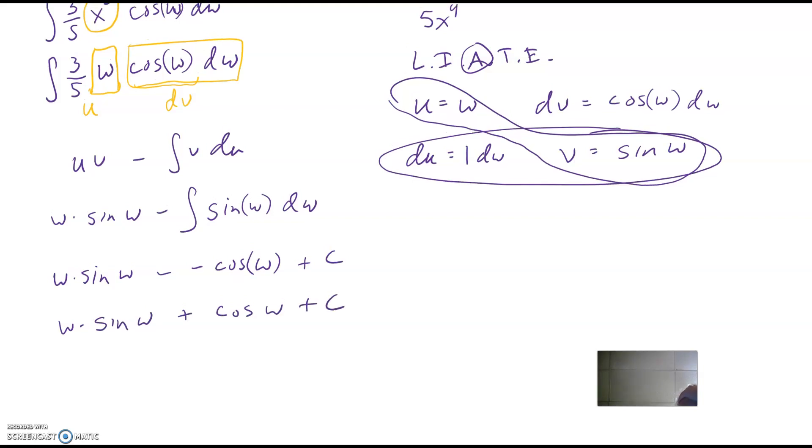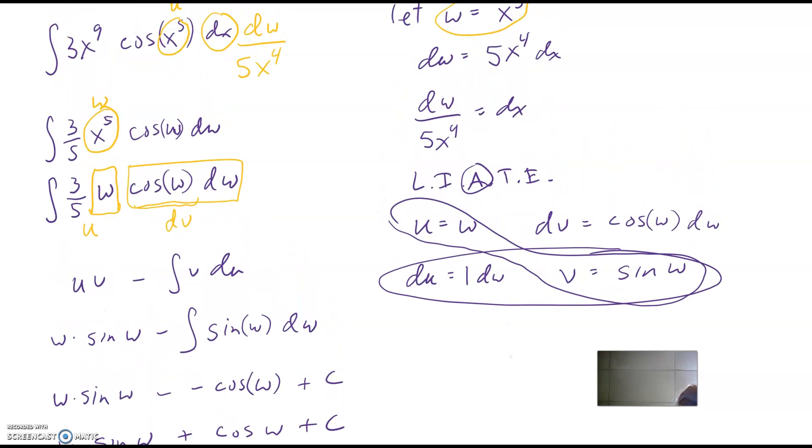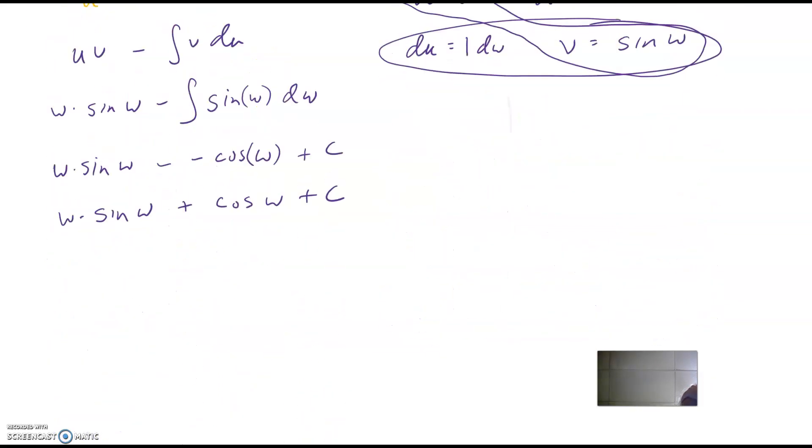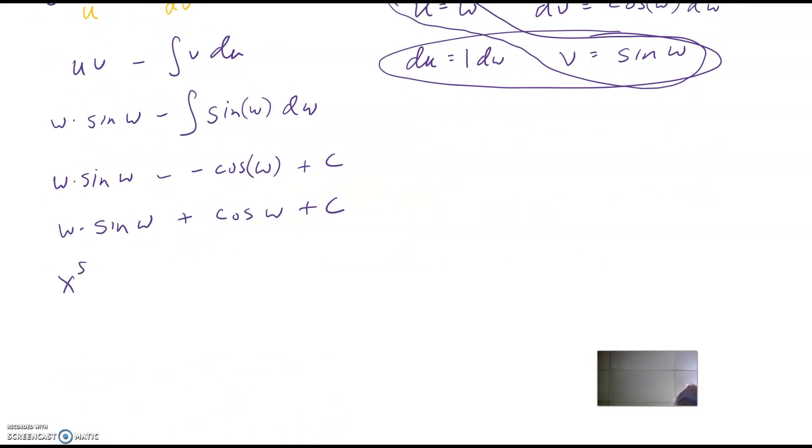Okay, then back substitute. W is x to the fifth. So I've got x to the fifth times sine x to the fifth plus cosine x to the fifth plus c.